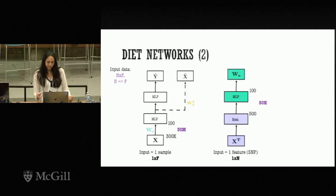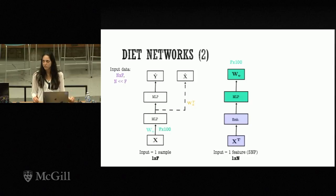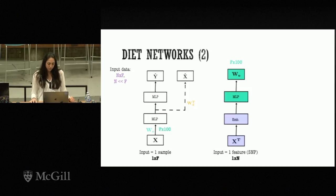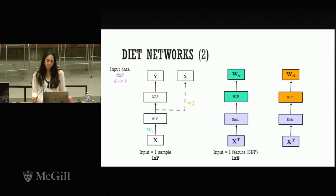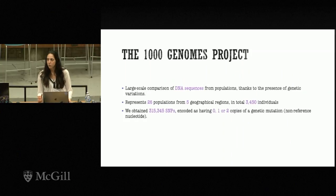To show that the connection between the two networks matches in terms of matrix sizes: the first layer of the predictor network has a weight matrix of size f × 100, and the output of the auxiliary network is also f × 100, matching perfectly. Similarly, we can have a second auxiliary network that predicts and ties the parameters of the reconstruction layer. This is the diet networks framework.